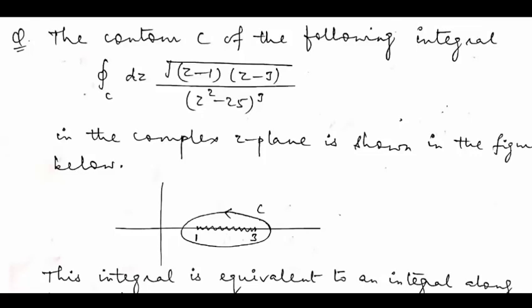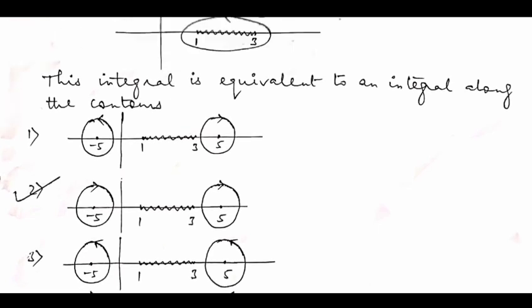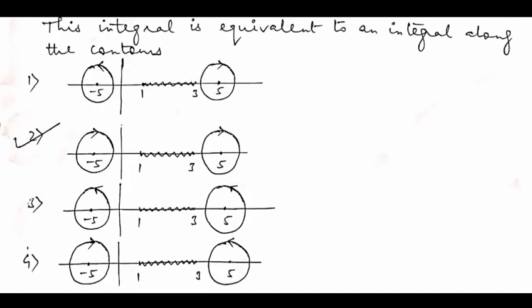In this video we will solve a problem that was asked in NET December 2018 paper. This is a problem of mathematical physics. It has a contour C of the integral of dz times root over (z minus 1)(z minus 3) divided by (z squared minus 25) to the power 3. The contour is in the clockwise direction and the wavy line corresponds to a branch cut. You have to identify which of the four given contours is equivalent to the original contour for evaluating the integral.